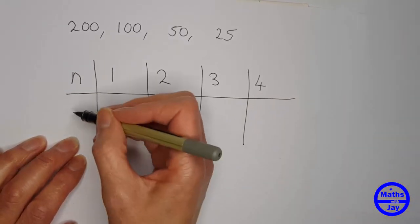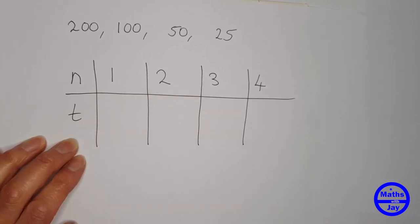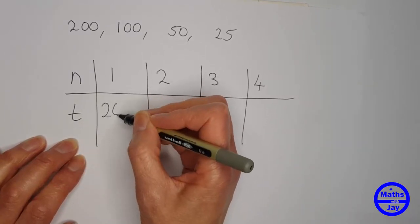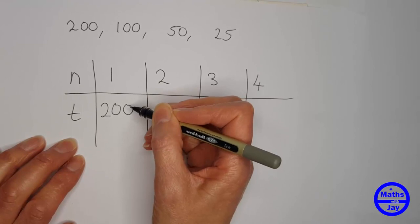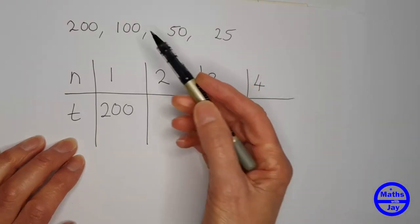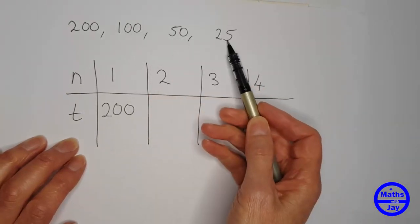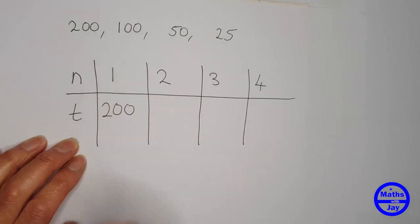And our term, well the first one is 200 and then what we want to do is to think about each of the numbers in the sequence in relation to the first number.